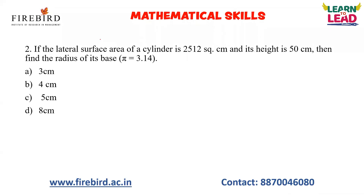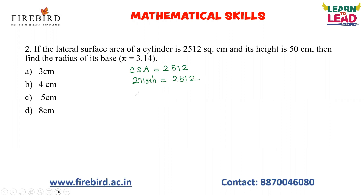Now see here: the lateral surface area of a cylinder is 2512 square units. The lateral surface area is the same as the curved surface area — both are 2512. The formula for curved surface area is 2πrh = 2512. The height given is 50 centimeters, and π should be taken as 3.14. We need to find the radius.